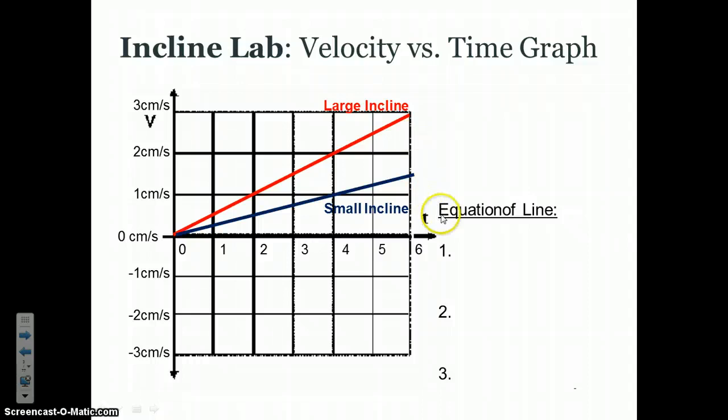So let's write down the equation of the line, and this is something that you should have had written on your whiteboard. Remember, you always start with y equals mx plus b. And we're going to write this for the red line, a sample one, a spinner on the large incline.